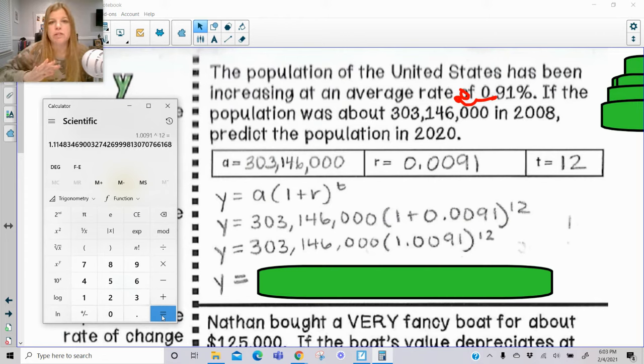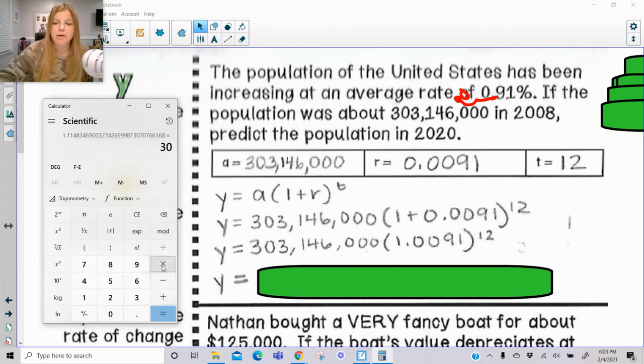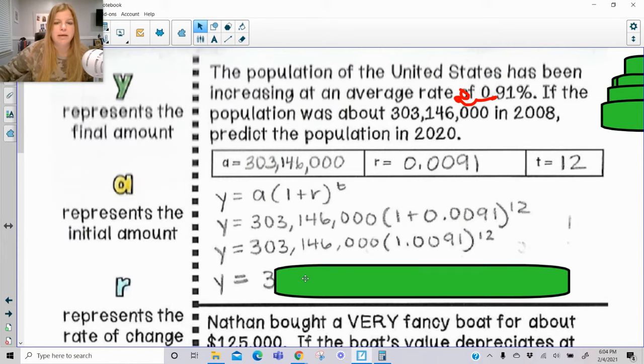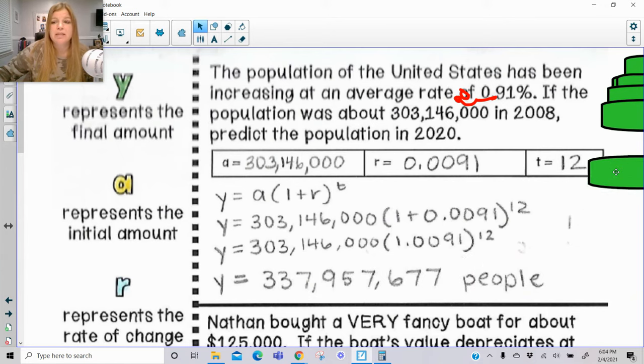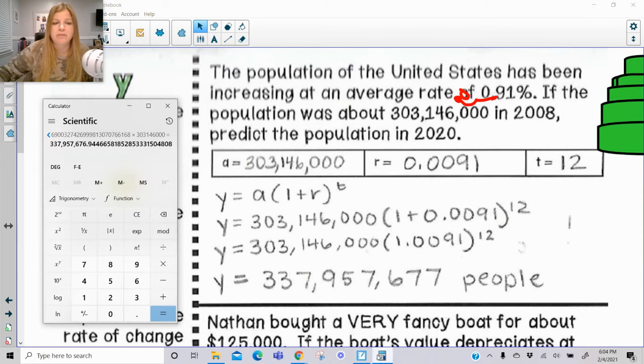So 1.0091, we're going to raise that. So the x to the y key is your exponent. We're going to raise that to the 12th power. I'm going to press enter. Leave that number fresh in your calculator. Don't write it down. Don't round it. And then multiply it by 303,146,000. Press enter. And this is the result I get. 337,956,677 people. You can see it was 0.9, so I just rounded. So it's approximately this many people. It's obviously not exact. And it's just a prediction.